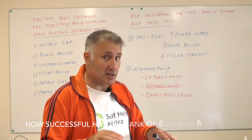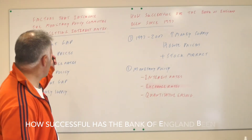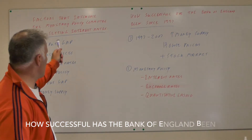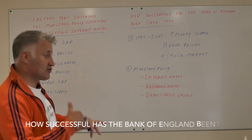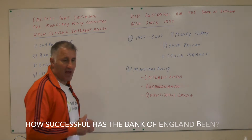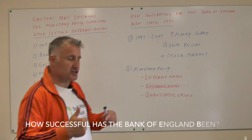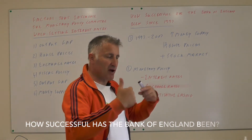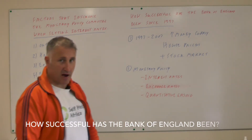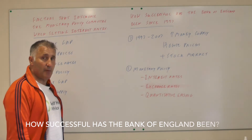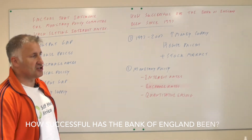What are the factors that influence the monetary policy committee when setting interest rates? One factor is the output gap. If the output gap is zero, that's a good sign, but if they think it will be positive in the future, they'll raise interest rates now so that demand falls slightly, preventing a positive output gap — because a positive output gap will cause demand pull inflation.